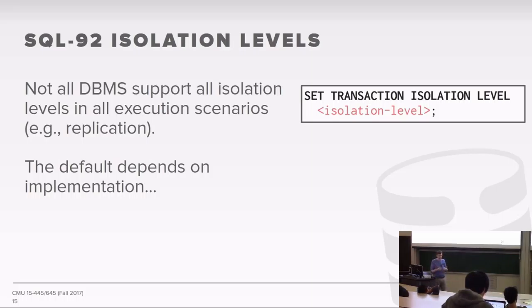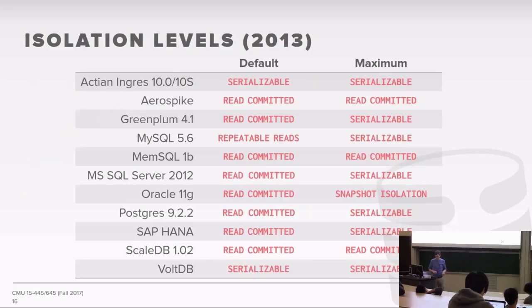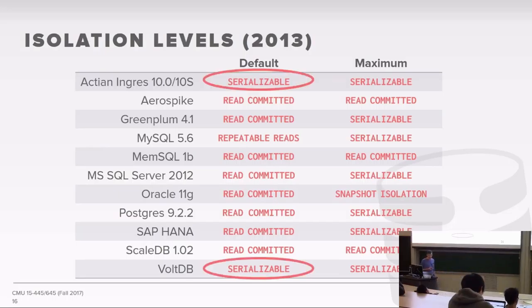You set this in SQL with the command SET TRANSACTION ISOLATION LEVEL followed by one of the four types. Not all database systems support all isolation levels, and they won't throw an error if you request an unsupported level—they'll silently use a higher level. The default also varies by system; the SQL standard doesn't specify a default. A 2013 survey by Peter Bailis (now a professor at Stanford) listed default and maximum isolation levels across various database systems.